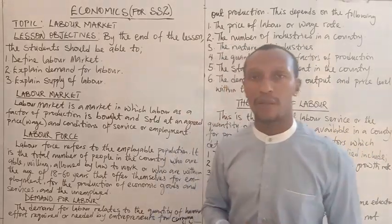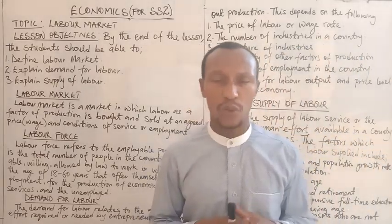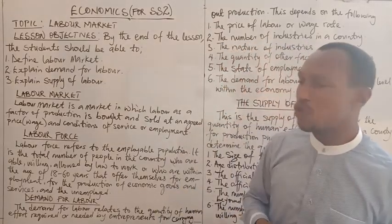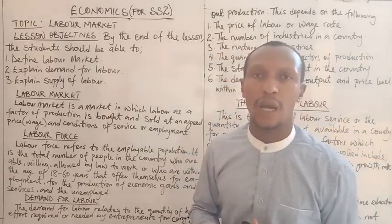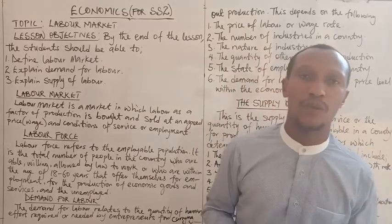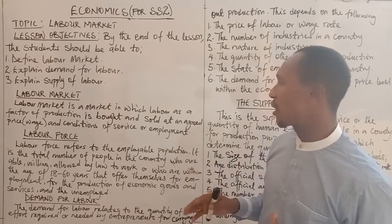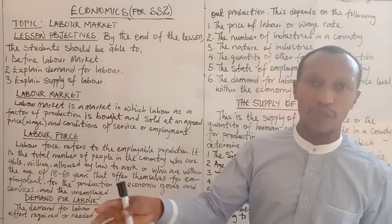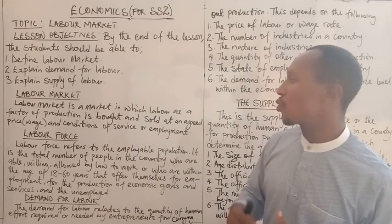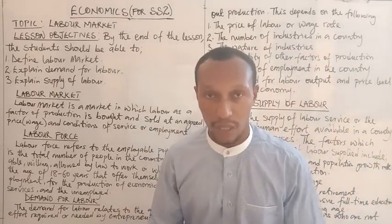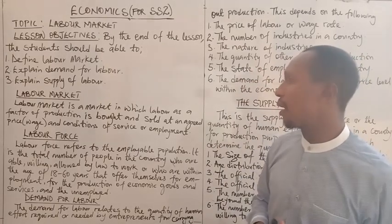So what we are talking about here — the labor market is a market where labor, as a factor of production, is bought and sold. Just as we have a market for goods like rice or beans, in the labor market, an agreed price — the reward for labor, which is wages — will be set, and the conditions of service and employment will also be agreed upon. That is what we mean by labor market.